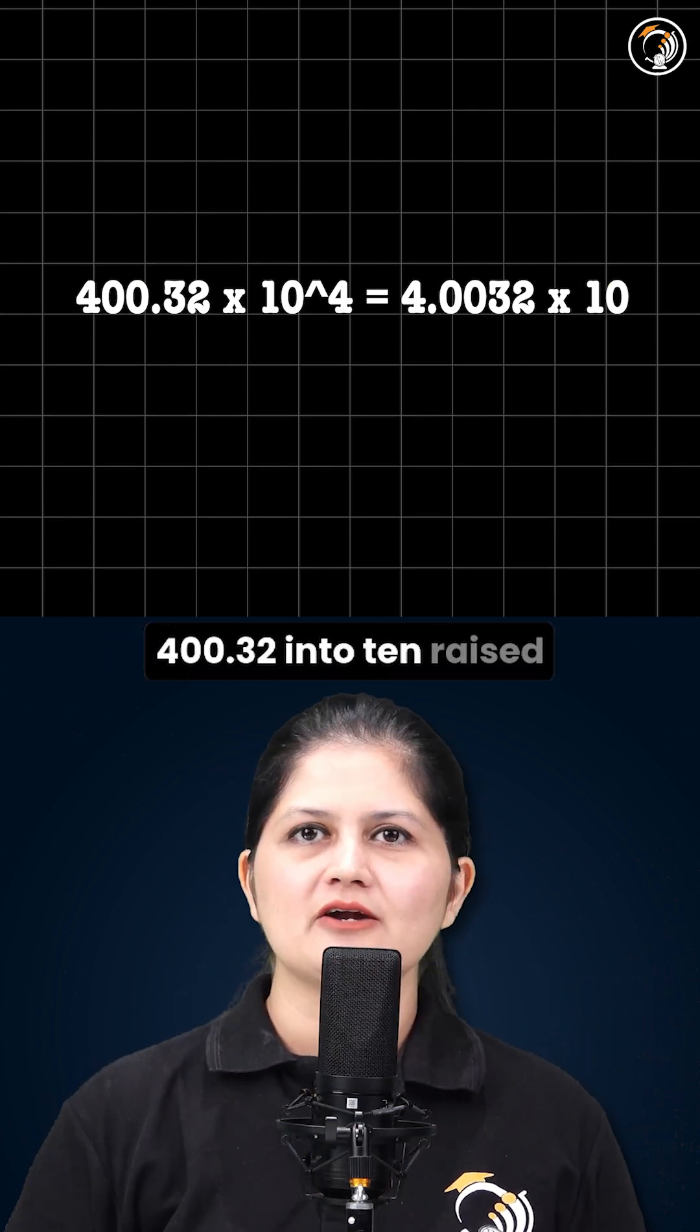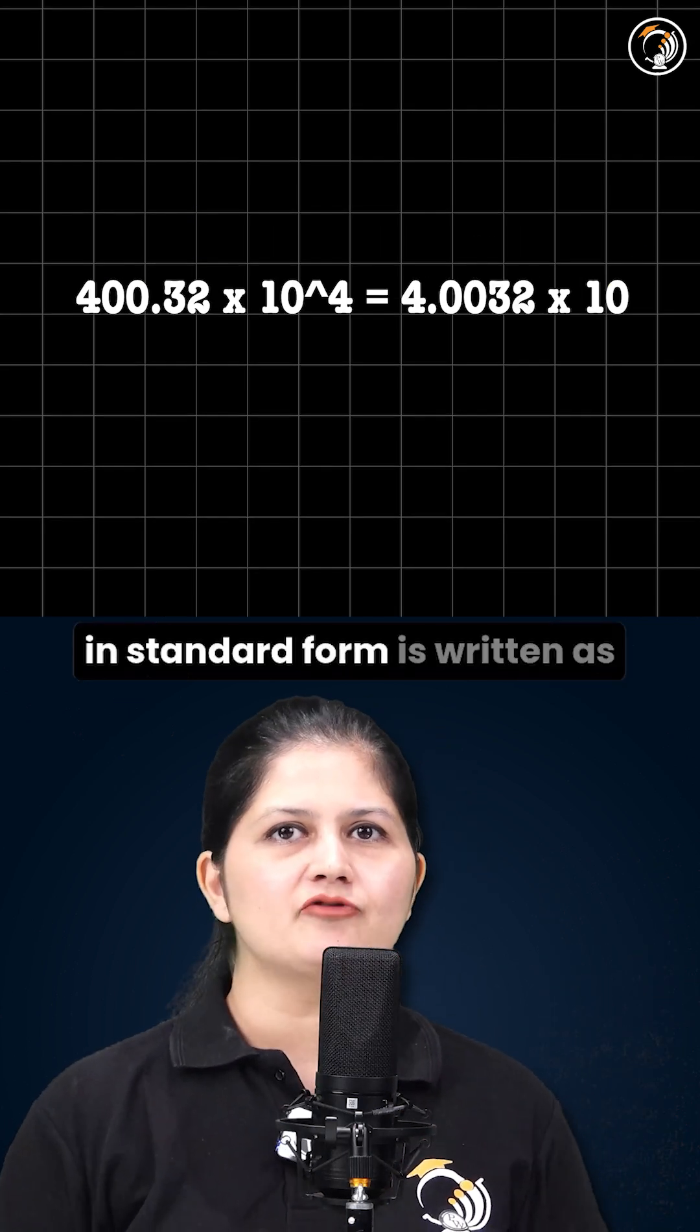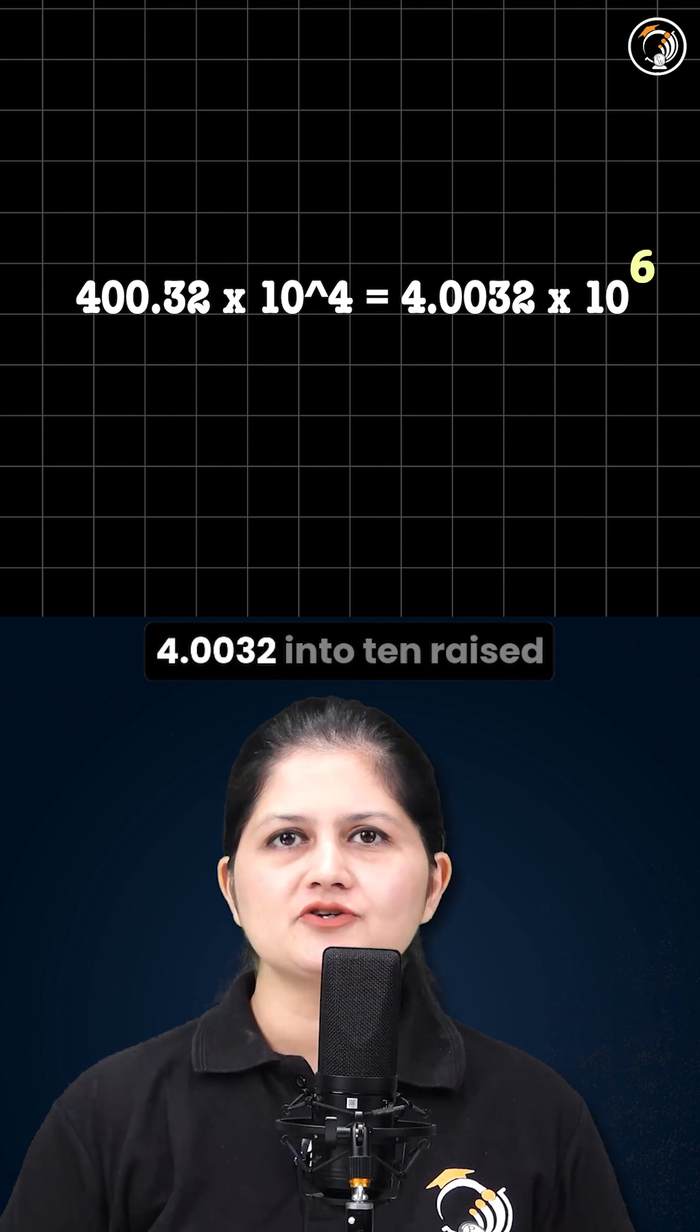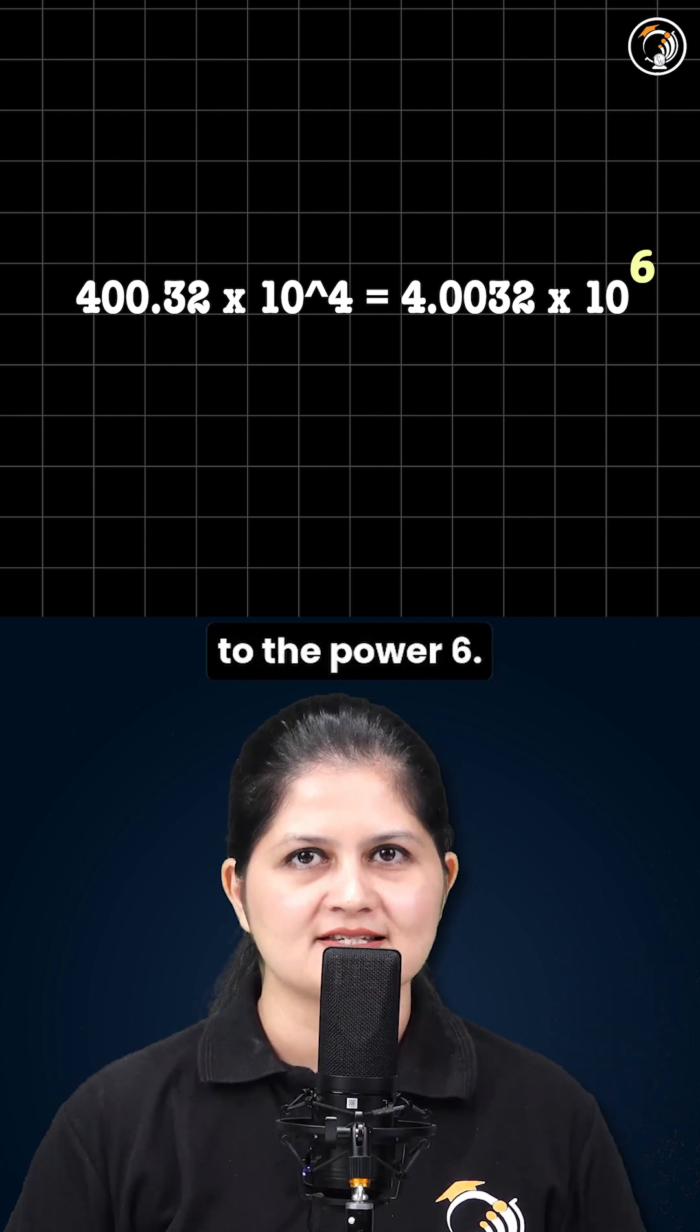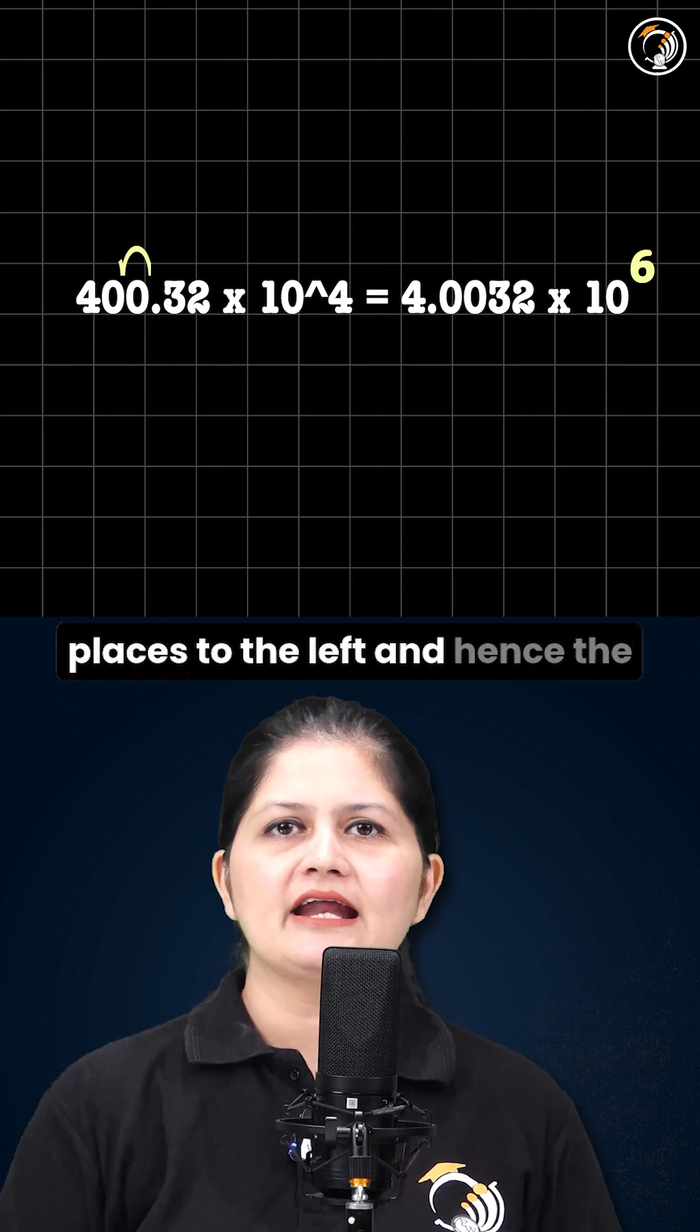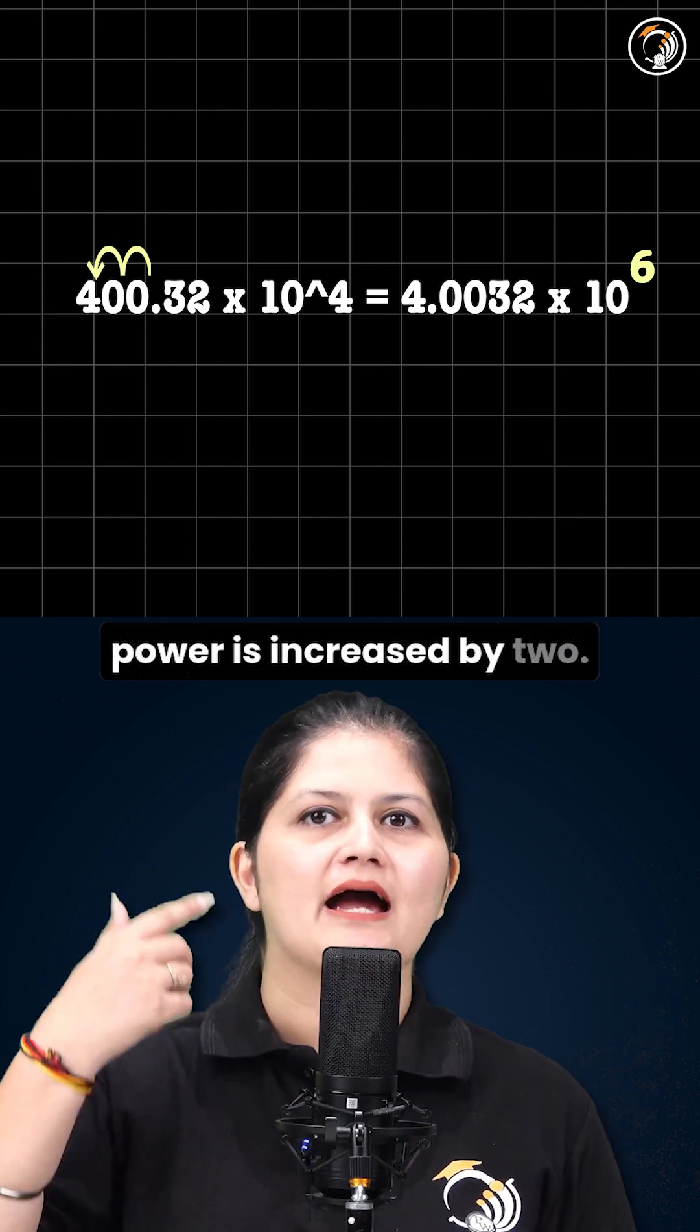400.32 into 10 raised to the power 4 in standard form is written as 4.0032 into 10 raised to the power 6. Here, decimal is shifted 2 places to the left and hence the power is increased by 2.